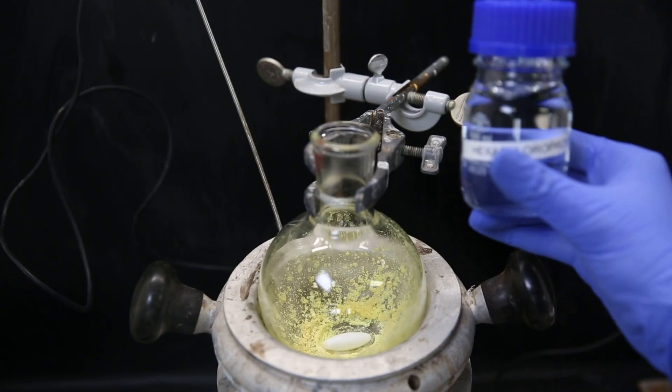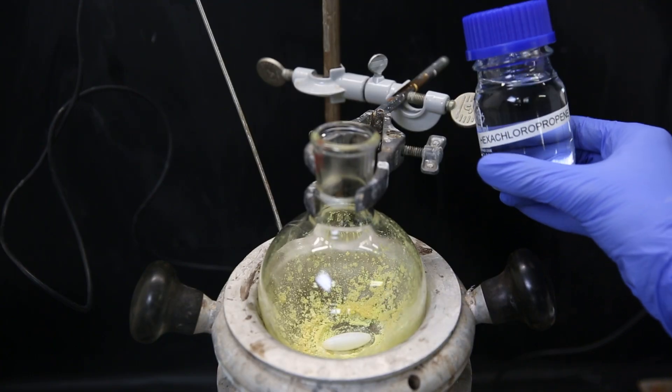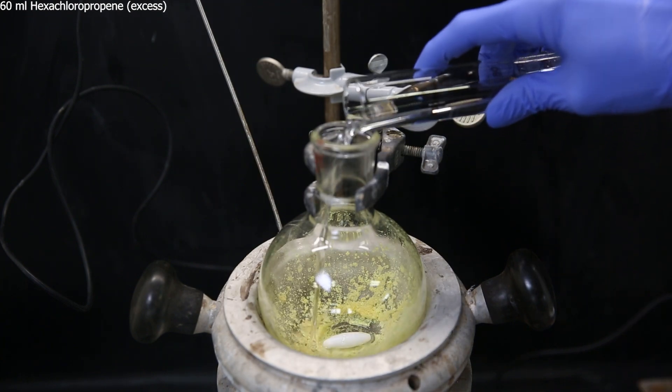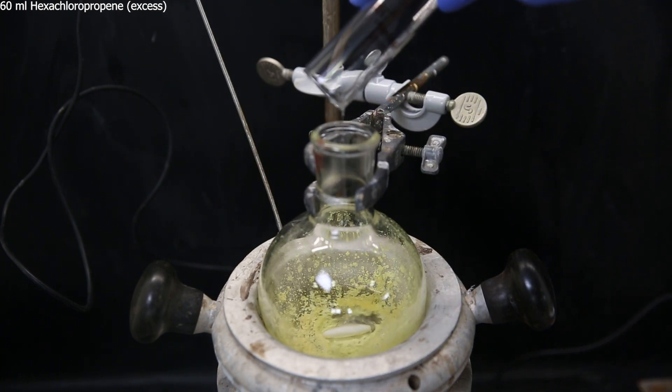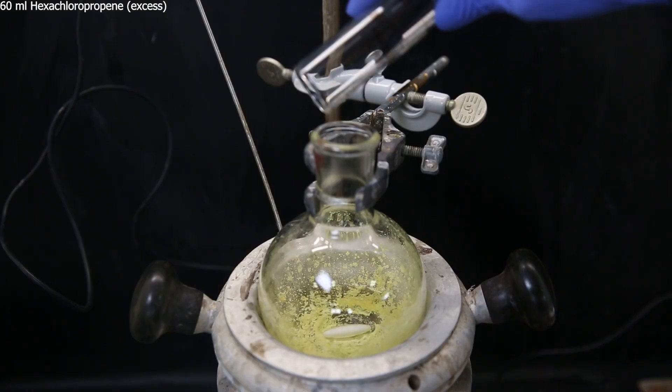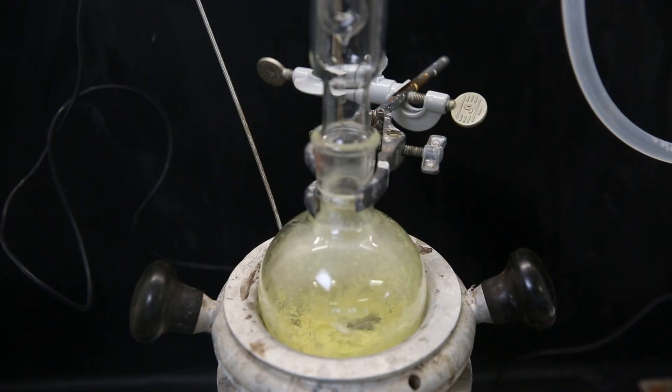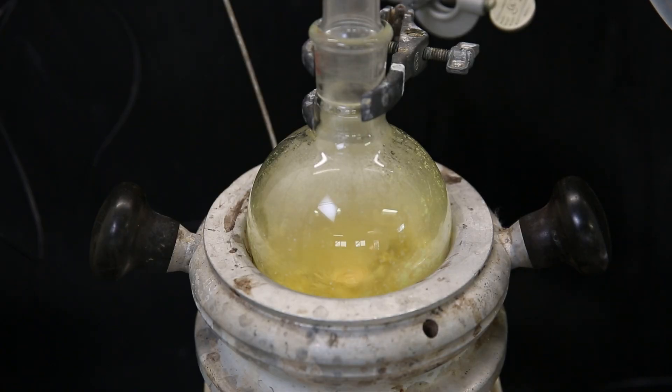So now it is time to use the hexachloropropene that I made, which I stored in a flask in the fridge. So I add 60 mls of hexachloropropene to the flask. And we see the uranyl nitrate is not soluble. To initiate the reaction we have to heat it strongly, so I attach a condenser and start heating the hexachloropropene to its boiling point, which is 210°C. When it gets hot enough, the uranyl nitrate starts to come loose and it begins to discolor.